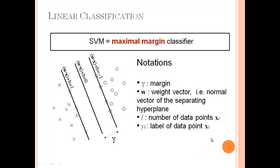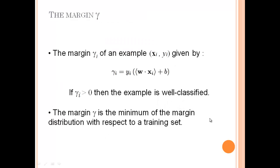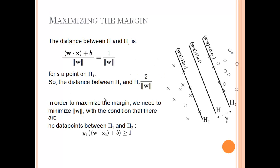In this slide different boundary lines are shown and the distance between them is called margin gamma. The weight vector is defined which is a normal vector of the separating hyperplane and L is the number of data points. The margin gamma between two planes for any point can be given by this equation. If gamma is greater than 0 then the example is well-classified. The margin gamma is the minimum of the margin distribution with respect to the training set.